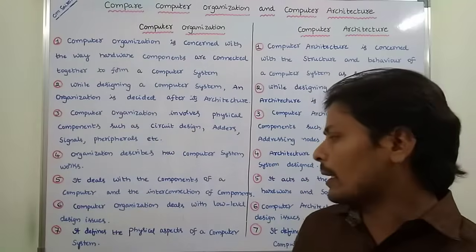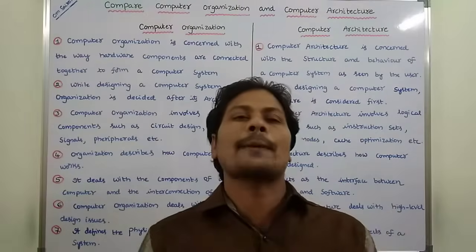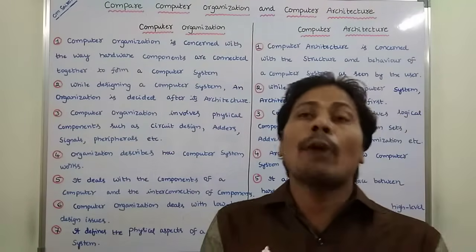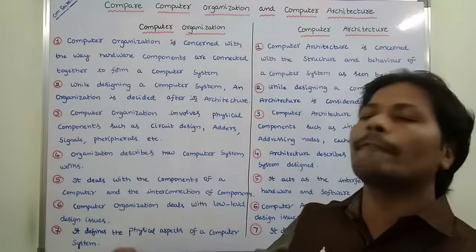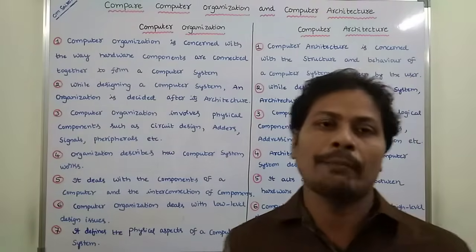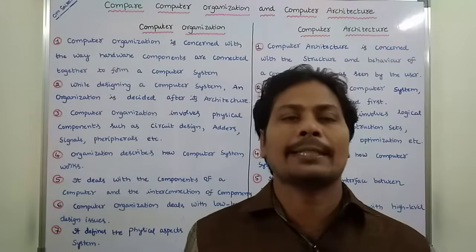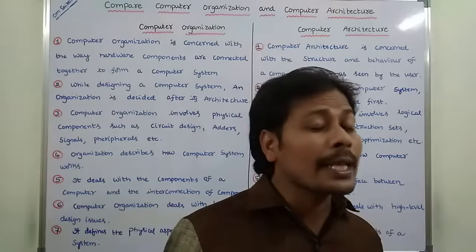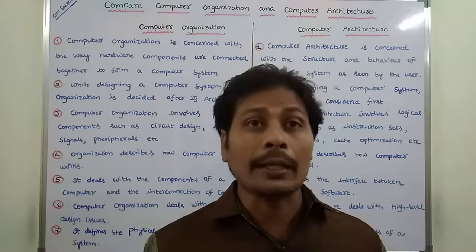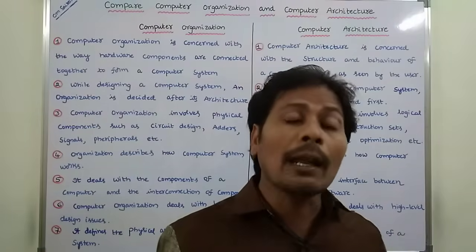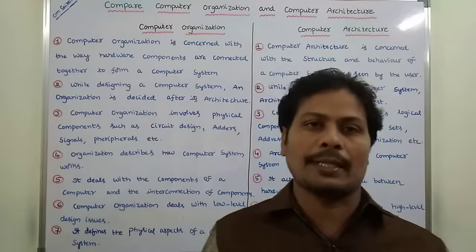Seventh point: Computer Organization defines the physical aspects of a Computer System — what physical components are there. Whereas, Computer Architecture defines the logical aspects of a Computer System, such as instruction set, cache optimization, and addressing modes. These are the logical aspects defined by Computer Architecture.